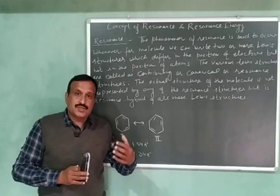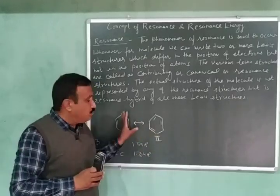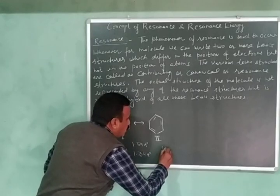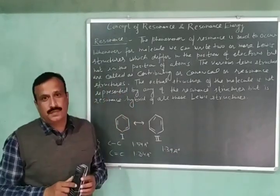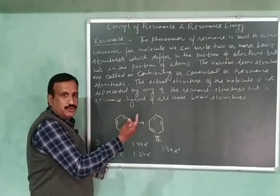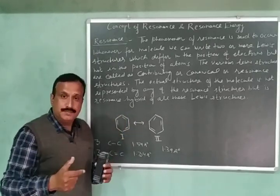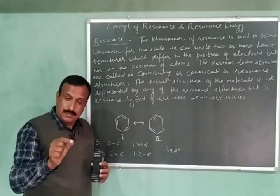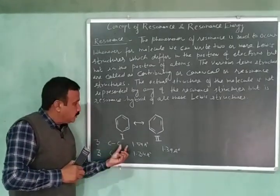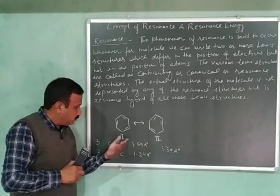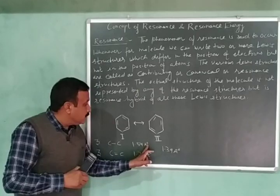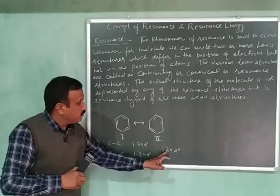But actually, X-ray diffraction studies revealed that in the case of benzene, all the carbon-carbon bonds are equal, and their bond length is equal to 1.39 angstroms. This means that any two adjacent carbon atoms of benzene are neither joined by a pure single bond nor by a pure double bond, because for the pure single bond the bond length is 1.54 angstroms, and for the pure double bond it is 1.34 angstroms, whereas the experimentally determined bond length, 1.39 angstroms, is in between these two.